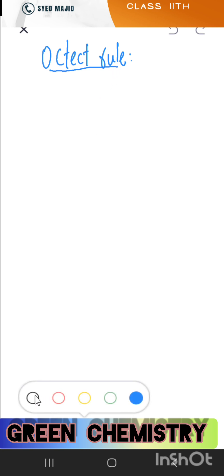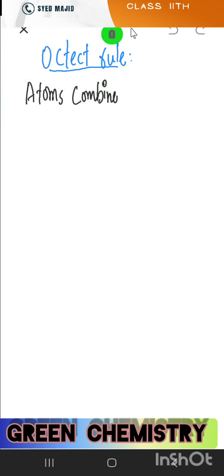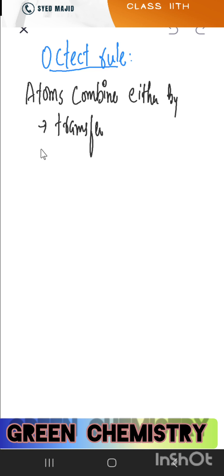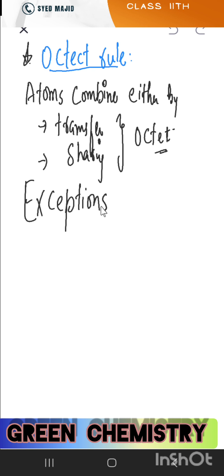Octet rule: when atoms combine by sharing or transfer of electrons to complete their octet, that is called the octet rule. But does the octet rule always apply? No — there are exceptions. Now let's read the exceptions of the octet rule.